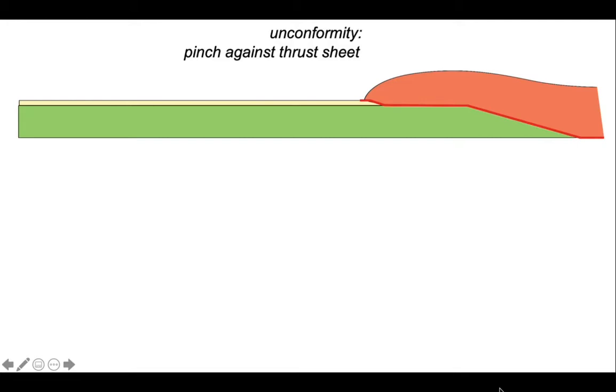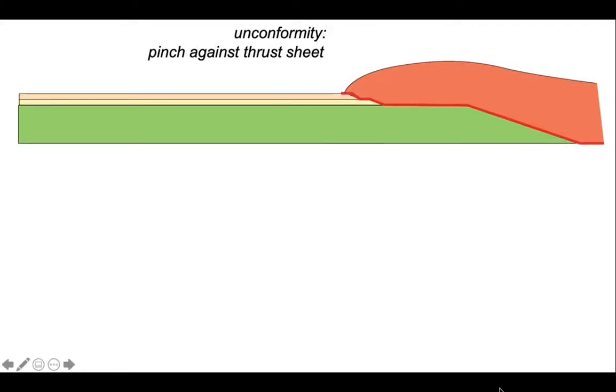The sediment is limited to the right because it pinches out against the thrust sheet. So the next batch of sediment will come in and the thrust sheet will climb up across that and again.